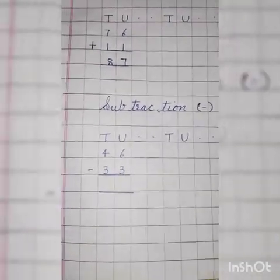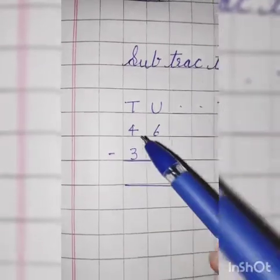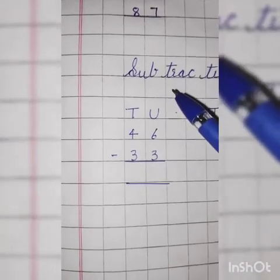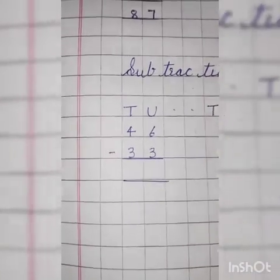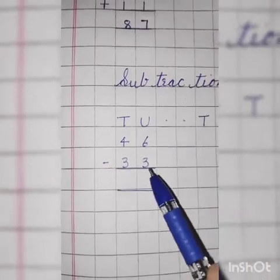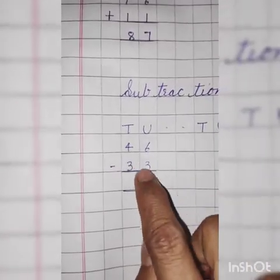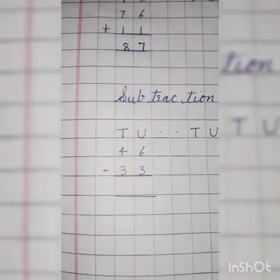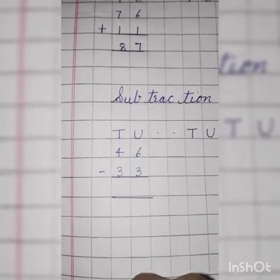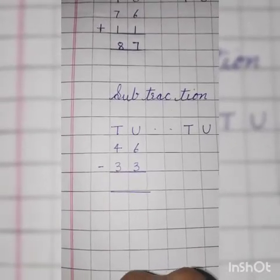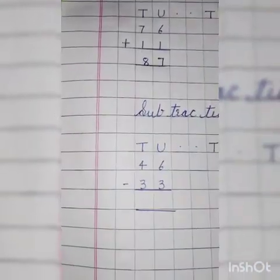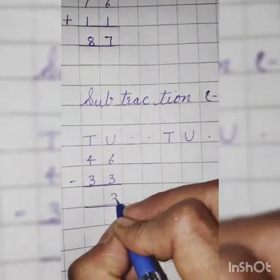Now next, subtraction. 46 minus 33. First we will solve the unit side: 6 minus 3. Throw 3, count till 6. What comes after 3? 4, 5, 6. How many fingers are left? 1, 2, 3. So answer is 3.